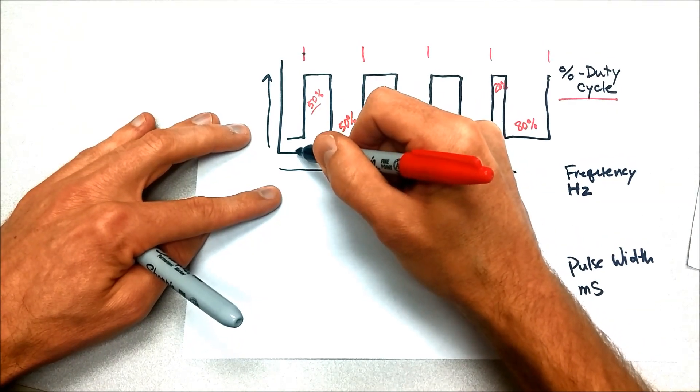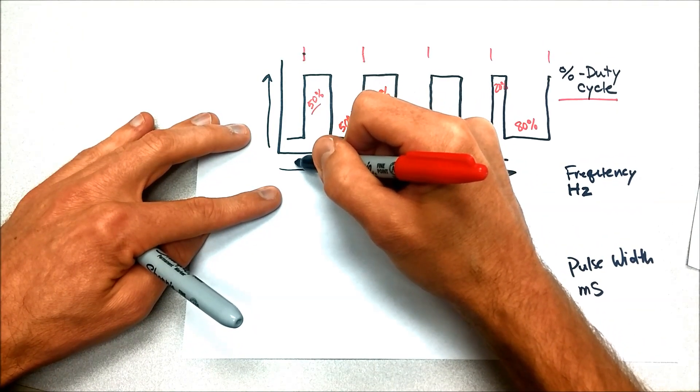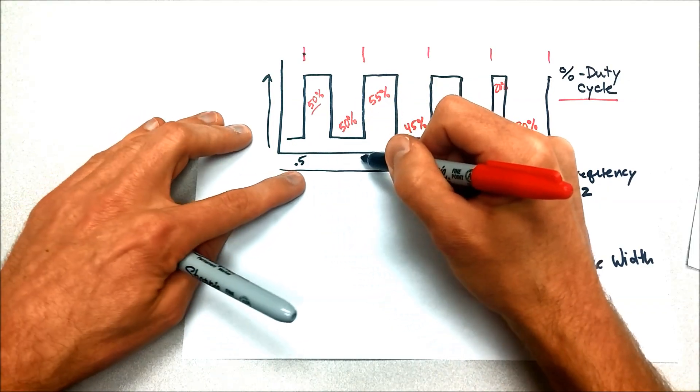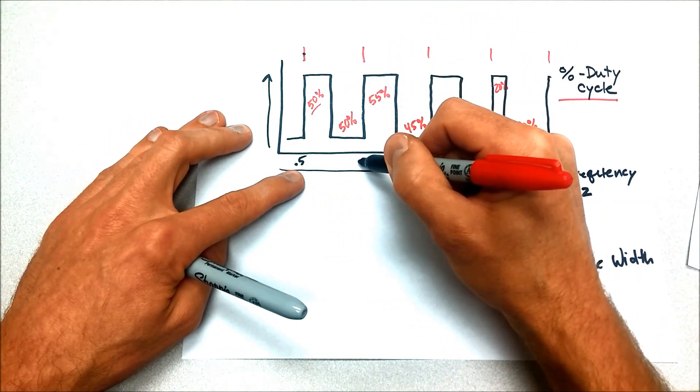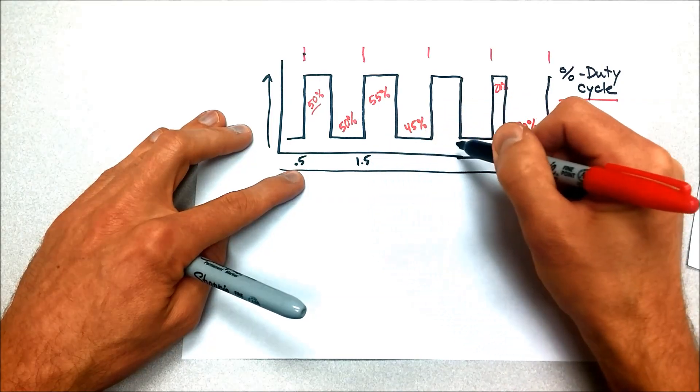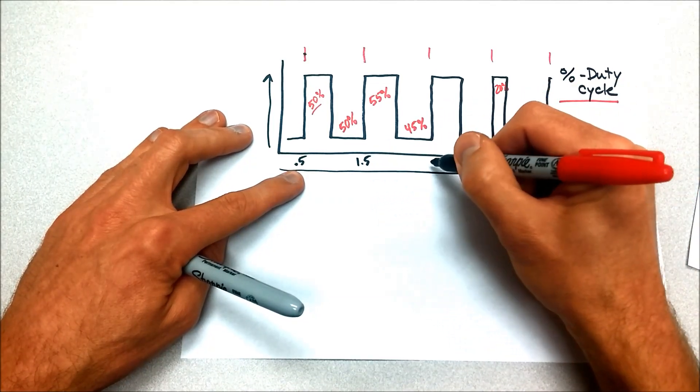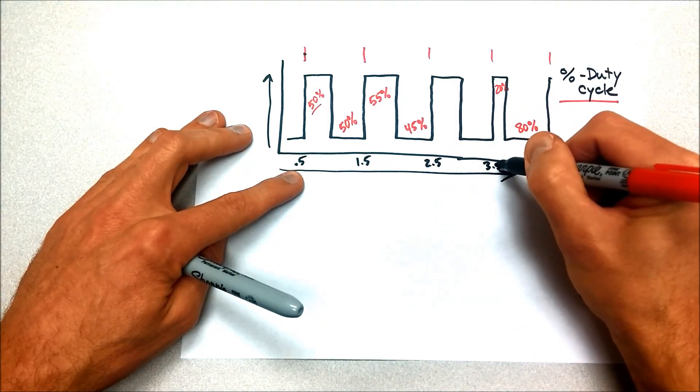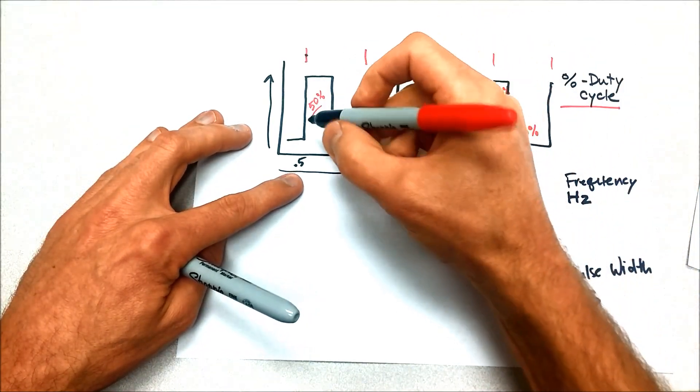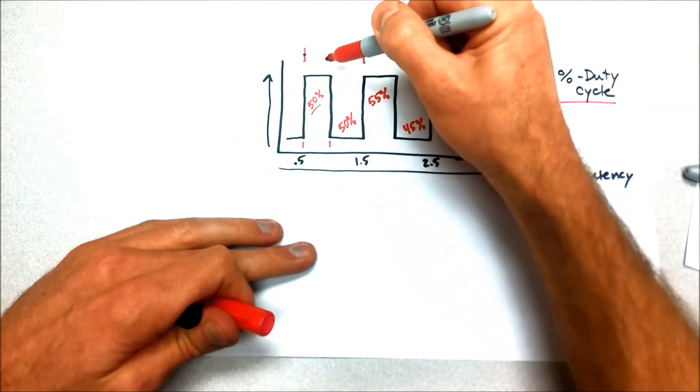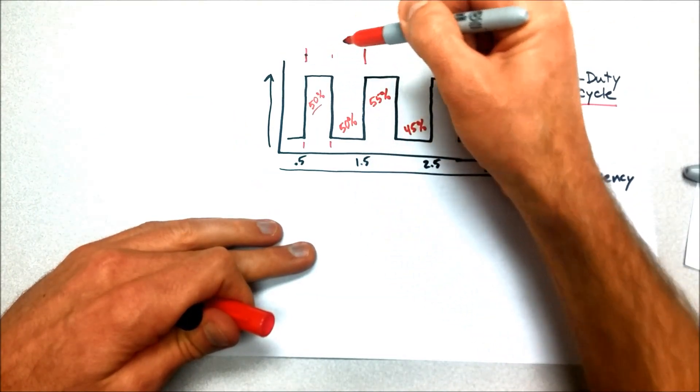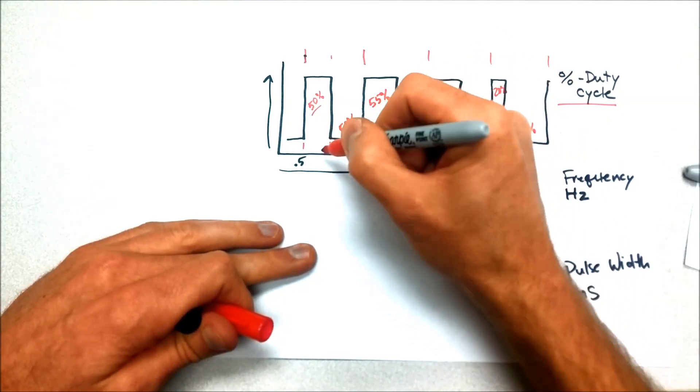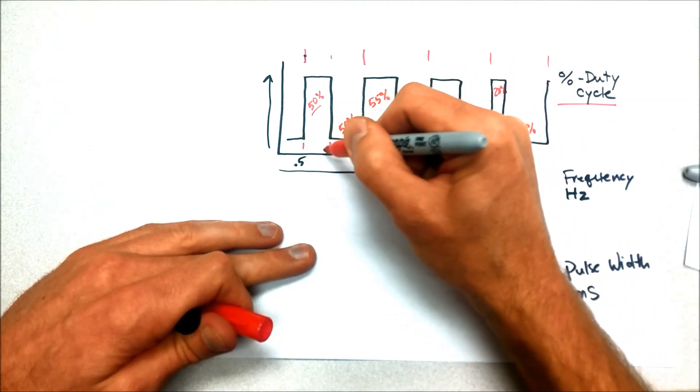And so if we were to come along here and say that this was 0.5 seconds here, and each of these cycles is happening at say one second, right, 1.5 seconds here, we would say, well, the distance between here and here, the distance between here and here is the amount of time that it was on for, and that is the width of that pulse.